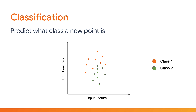However, in this case, each point represents a certain class of data. Maybe the scatterplot is showing results for two different types of flowers plotted against two common input features, maybe the number of petals and stem length, for example.